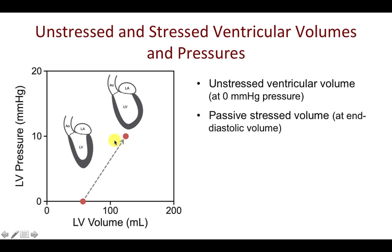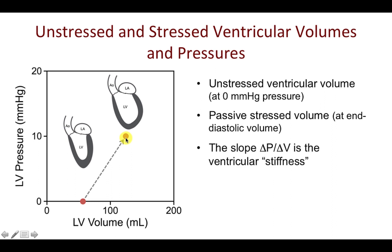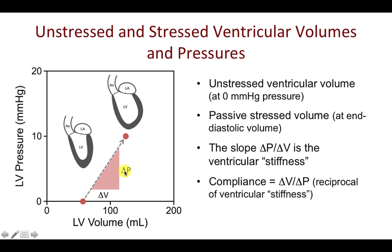This corresponds to a left ventricular pressure of 10 millimeters of mercury, representing the passive stressed volume of the ventricle at end-diastolic volume. The slope of this line, which is delta P divided by delta V, is the ventricular stiffness. Compliance, as already defined, is the change in volume divided by the change in pressure, and is therefore the reciprocal of ventricular stiffness.